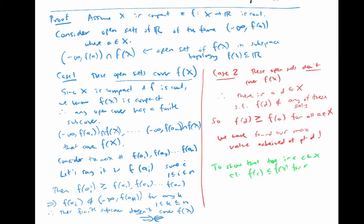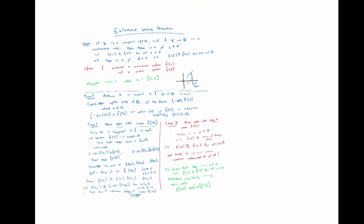And to show that there is a c in x such that f of c is less than or equal to f of x, for all x in x, you just proceed similarly, using the open sets of the form f of a to infinity intersected with the image f of x. So that's the proof of the extreme value theorem.